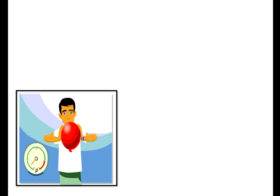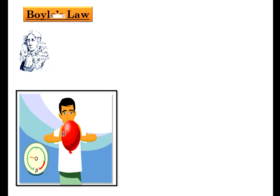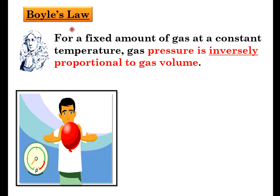In this particular condition, if you notice, the boy is actually pressing the balloon. When the balloon is compressed, the pressure increases. But when the balloon is not compressed, the pressure drops. The temperature is not related into this situation - so this is actually Boyle's Law. Boyle's Law states that for a fixed amount of gas at a constant temperature, the gas pressure is inversely proportionate to the gas volume.